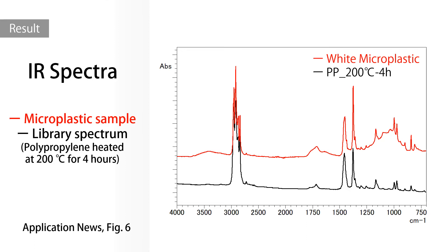The red line is the sample spectrum while the black line is the library spectrum. The library hit indicated the microplastic spectrum matches that of degraded polypropylene. The characteristic hydroxy and carbonyl peaks are also detected, indicating the plastic in question has gone through environmental degradation. The simple measurement identified the white microplastic to be that of degraded polypropylene.